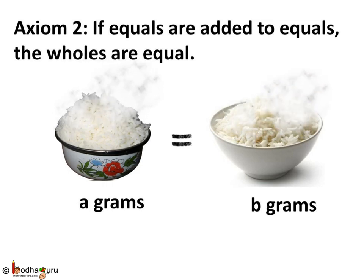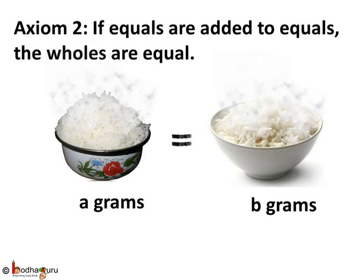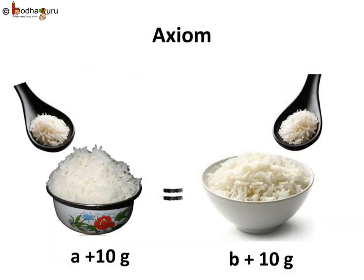If equals are added to equals, the wholes are equal. Say the two bowls have the same amount of rice, a and b, so a is equal to b. Now we add 10 grams of rice to each — that is, we added equal values to both. So a plus 10 is equal to b plus 10. That is, still both have the same amount of rice. We use this axiom in algebra and arithmetic all the time.